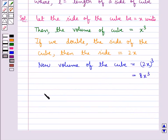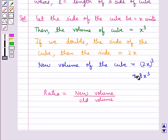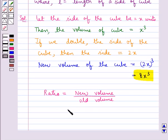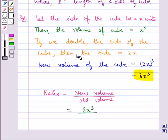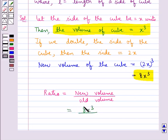Then the ratio would be equal to new volume upon old volume. The new volume is 8x³ and the old volume is x³. Thus the ratio is equal to 8x³ upon x³.